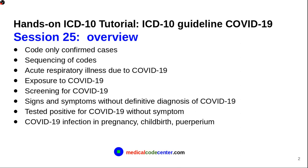First, an overview of this session. We will talk about the guidelines for COVID-19: the first rule is to code only confirmed cases, how to sequence the codes, how to code acute respiratory illness due to COVID-19, and how to code exposure or screening for COVID-19. We'll also cover what to do if the patient doesn't have a definite diagnosis but only has symptoms and signs, how to code a patient without symptoms who tested positive, and how to code COVID-19 infection in pregnancy, childbirth, and the puerperium period — which means four weeks after childbirth.